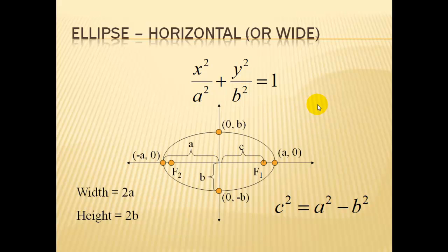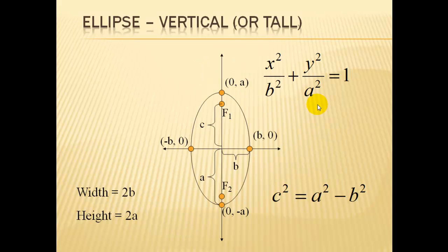Let's look at this same template for vertical. So here we have, you can see the a and the b have changed. Now the way we know a and b for an ellipse, a is always the biggest number. So the bigger number, if it's under y, it's vertical. If the bigger number is under x, it's going to be horizontal.